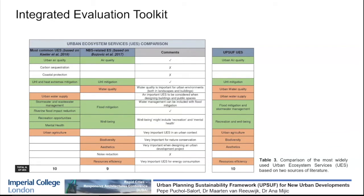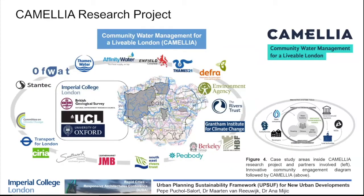I would like to start talking about Camellia. Camellia is a large research project led by Imperial College London, coming from Community Water Management for a Liveable London. It involves a large number of partners, among them UCL, University of Oxford, BGS, industry partners such as Thames Water, and institutional organisations such as Enfield Council, the Environment Agency, and Peabody. The key point of Camellia is to have citizens at the core of our design and studies.